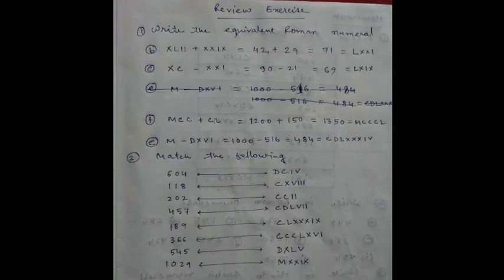69 means LXIX. Number f: MCC plus CL. MCC is 1200, CL means 150, so 1200 plus 150 equals 1350. 1000 means M, 300 means CCC, 50 means L.